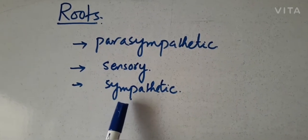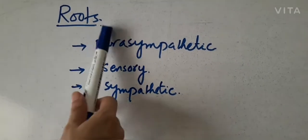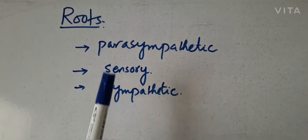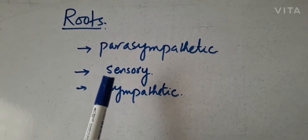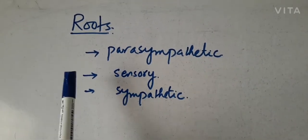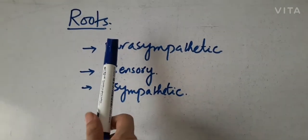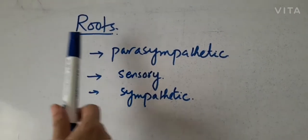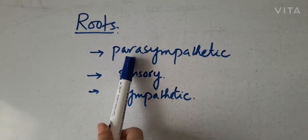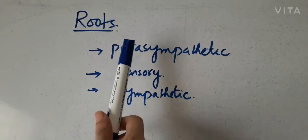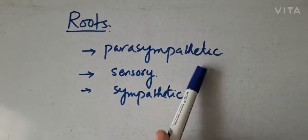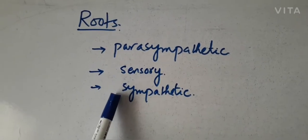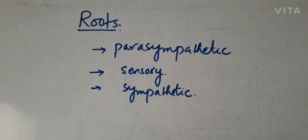Branches arise from the ganglion, and there are three types of fibres. But as I told you, only the parasympathetic fibres will relay here, because it is a parasympathetic type of ganglion, and postganglionic fibres arise from it. Sensory and sympathetic roots pass through without relay.